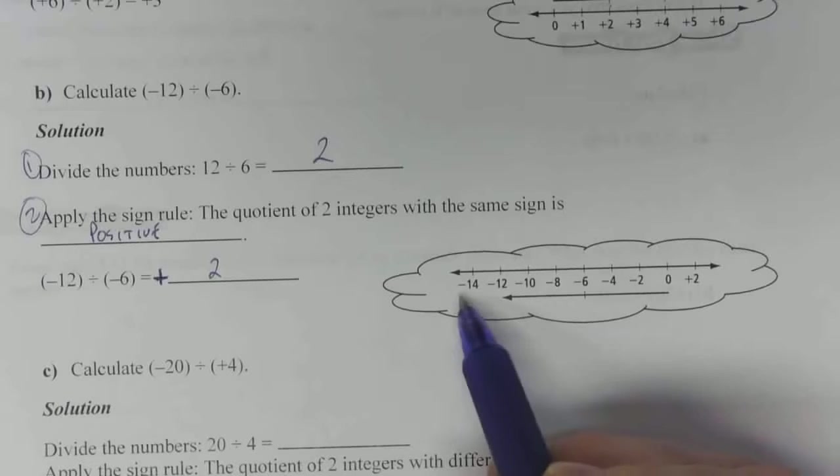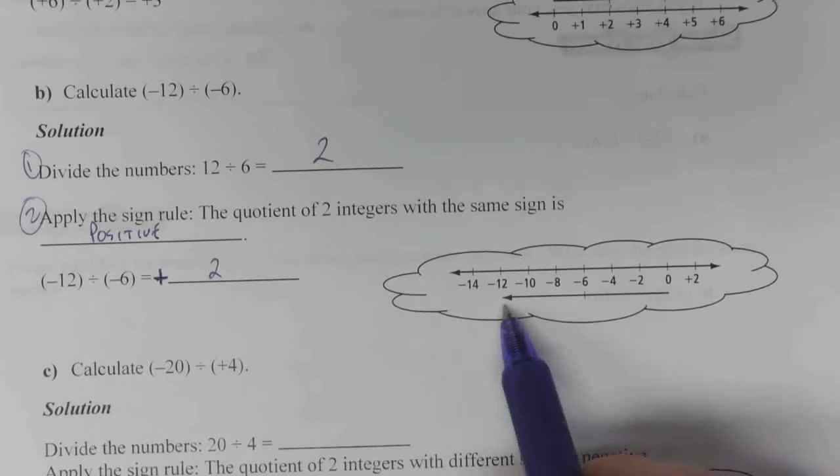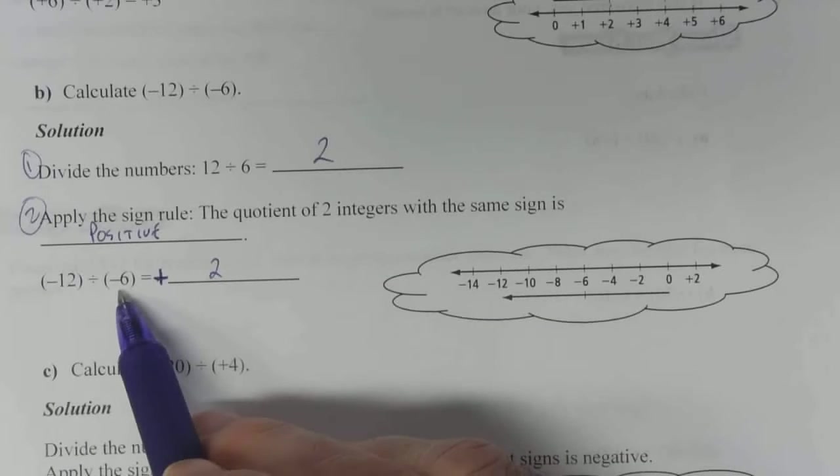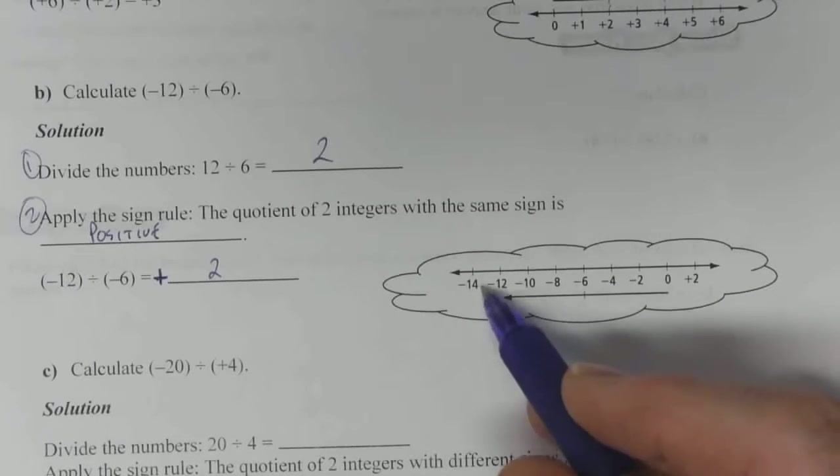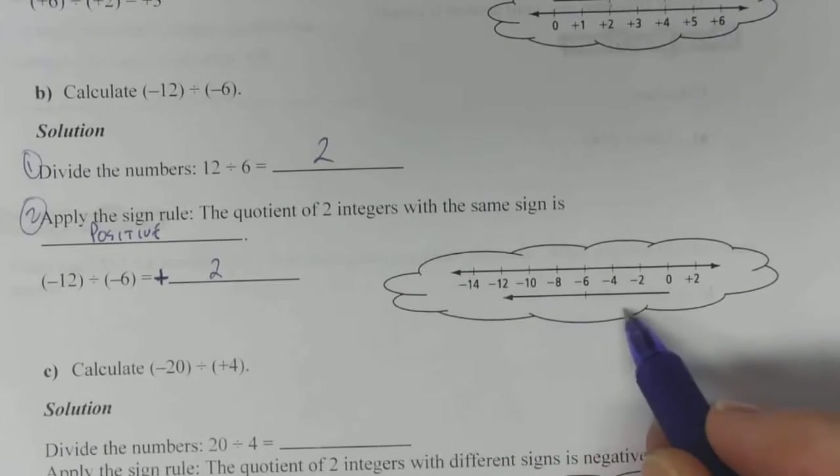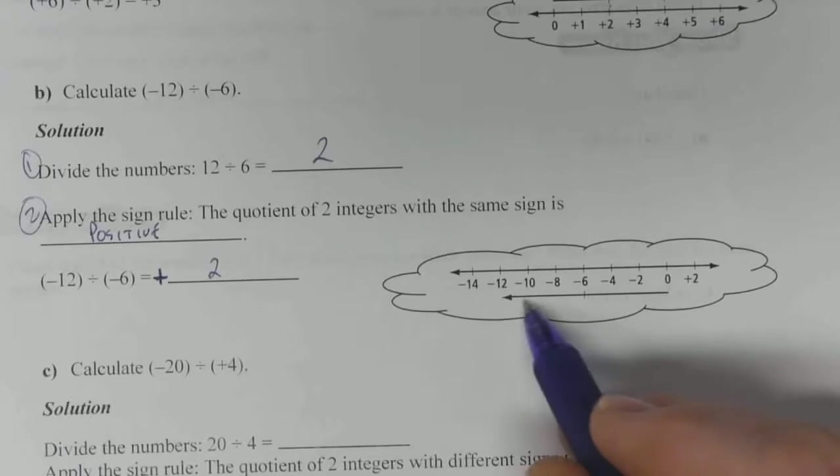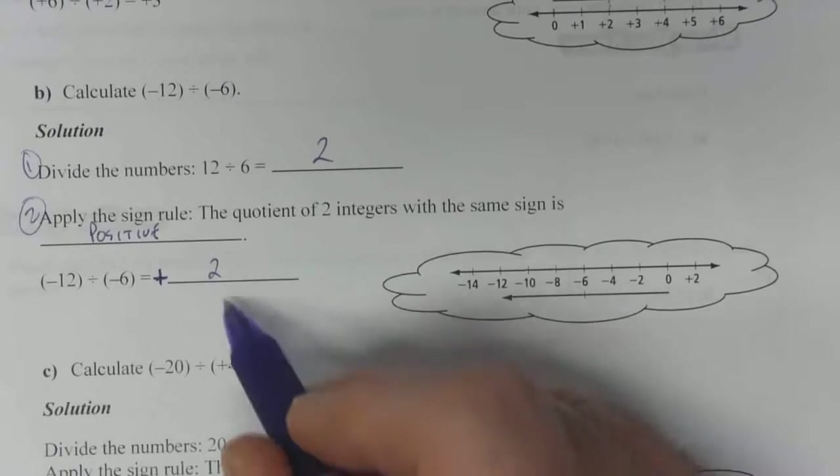Again, we can take negative 12 on our number line. Do 6 negatives in each group. That's one batch of 6, that's another batch of 6. And that creates, if you put a tick there, two sections for your arrow. Your answer is 2.